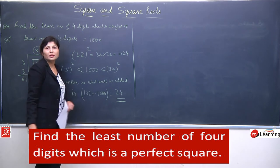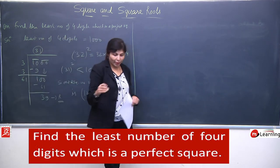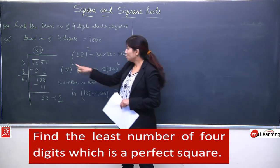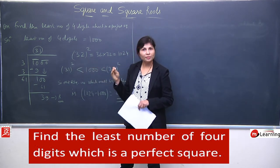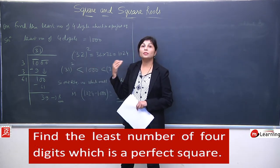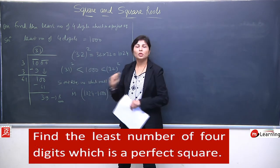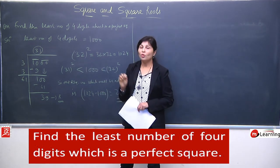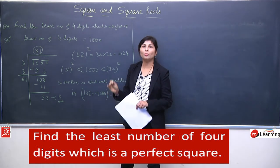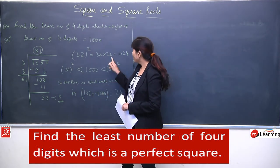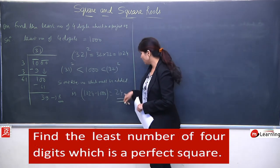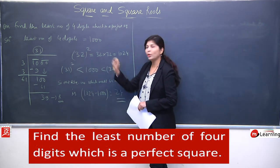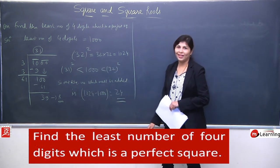Now you will write: it is clearly observed that 1000 is lying between 31² and 32². So the required number which must be added is 1024 - 1000 = 24. So 24 is the required number. 1000 + 24 = 1024. Aur jab hum iska square root find karenge, toh square root aayega 32. 4-digit ka sabse chhota perfect square 1024 hoga, jo tab aayega jab hum 1000 mein 24 add karenge.